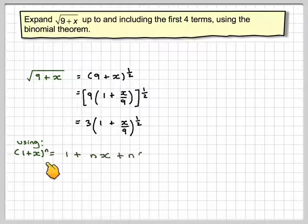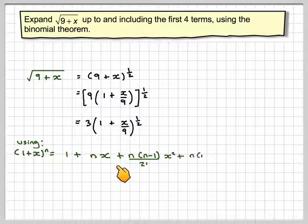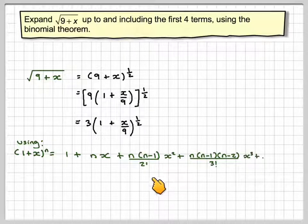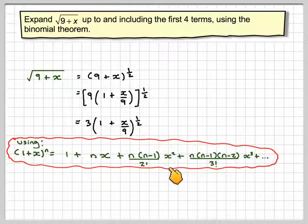So expand using 1 plus x to the n, 1 plus nx plus n times n minus 1 over 2 factorial times x squared, plus n times n minus 1 times n minus 2 over 3 factorial times x cubed, etc.